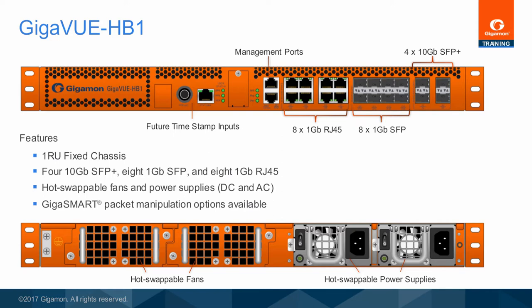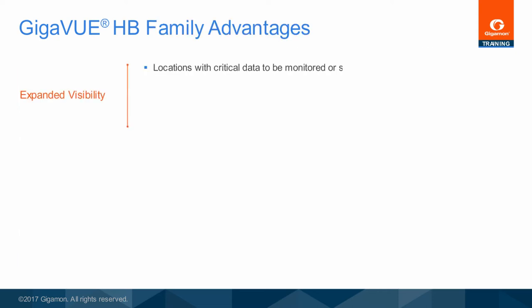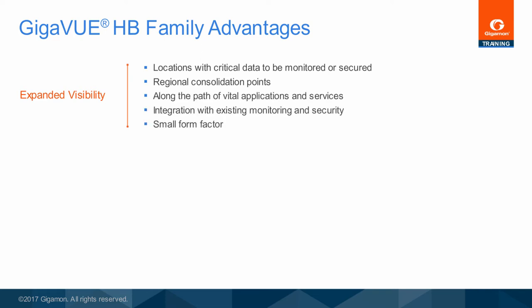Refer to the user documentation and data sheets for the latest features available on the Gigaview HB family. The Gigamon user community shared a variety of needs which could be addressed with a more dense and flexible, but still very small, visibility platform node. The Gigaview HB1 was designed to meet many of those expressed needs. Expanded visibility opens access to distributed processing centers with critical and often sensitive information, but limited access and few or no monitoring tools. In some cases, the remote site was not so small but still had limited access and tools, such as a regional consolidation point. Other locations requiring monitoring service were remote, critical but lightly staffed, or even placements with short operational duration. All still required close monitoring and security, but experienced comparatively low traffic volumes.